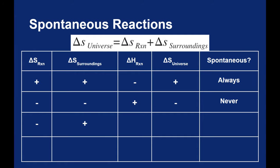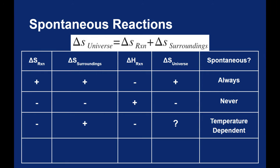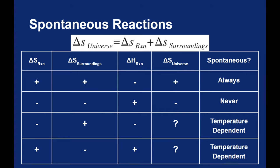The more interesting case is when we get mixed signs. For freezing water, we said that the delta S of the reaction is negative and the delta S of the surroundings is positive — an exothermic reaction. So what will the delta S of the universe be? It actually depends on which term is bigger: the delta S of the reaction or the delta S of the surroundings — what's going to win that tug of war? Whether or not that reaction is spontaneous will actually depend on the temperature. If we flip the signs — delta S of the reaction is positive but delta S of the surroundings is negative, meaning an endothermic process — again, we don't know what the delta S of the universe will be. It will depend on which is bigger, and this will also be temperature dependent.